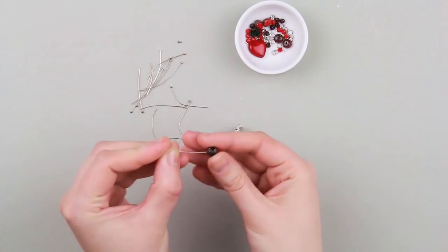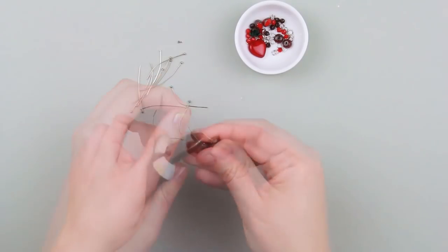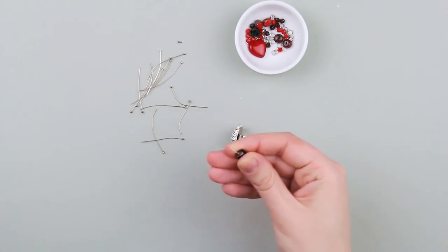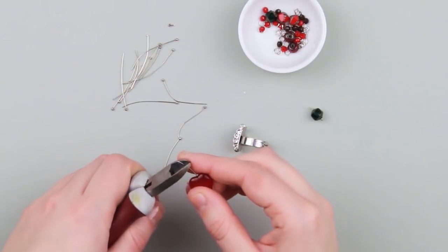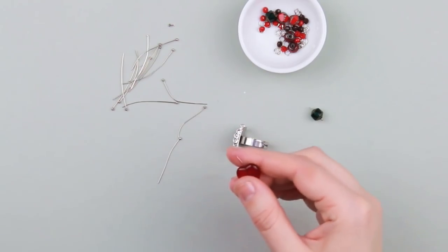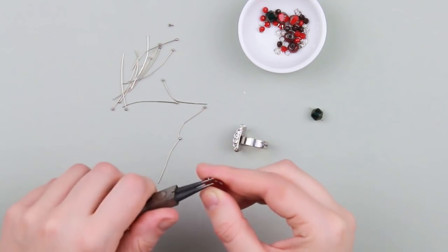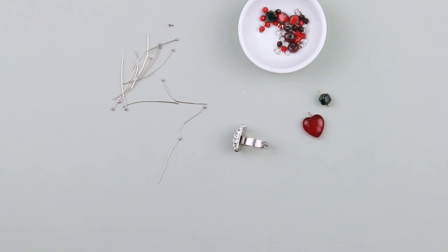Take a decorative pin and thread a bead. Cut off the excess using the cutting pliers. Make a loop using the round nose pliers. Work up a big heart-shaped bead of a deep wine shade in the same way. Proceed in the same way with the rest of the beads.